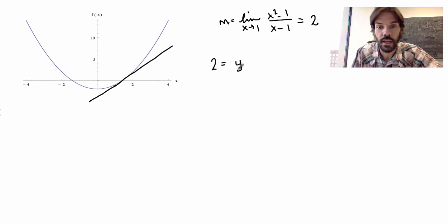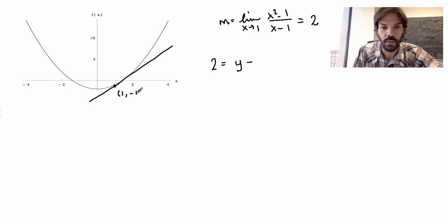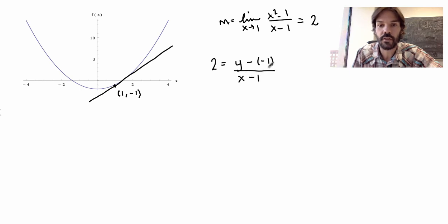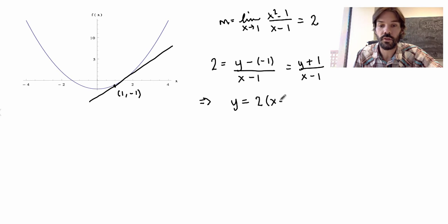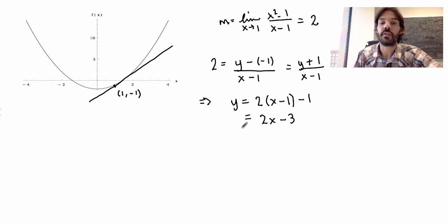From this we can write down the equation of the tangent line using the slope formula. We know the slope is 2, and that equals (y − y-coordinate)/(x − x-coordinate). Since our point has coordinates (1, 1), that's (y − 1)/(x − 1) = 2. Rearranging by multiplying by (x − 1), we get y = 2(x − 1) + 1, which is 2x − 2 + 1, giving us 2x − 1. So that's the equation of the tangent line at the point (1, 1).